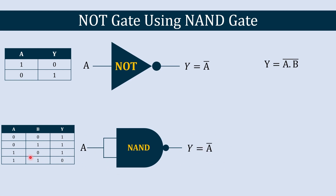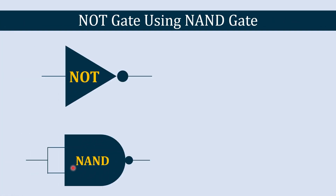We can verify this with the truth table: when both inputs are 0 the output is 1, and when both inputs are 1 the output is 0. So it simply inverts the input. That is how you create a NOT gate using a single NAND gate, and this is the circuit which represents it.